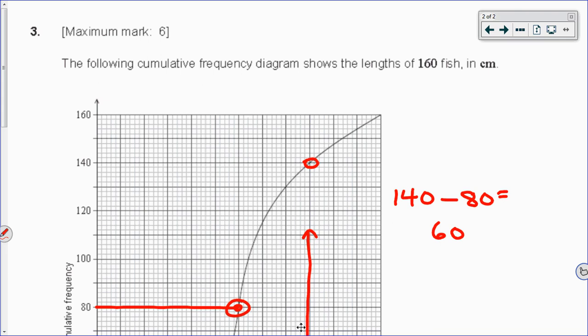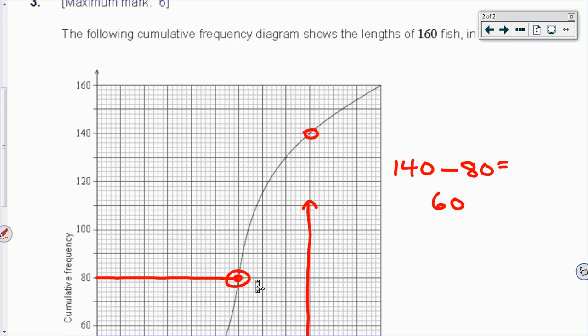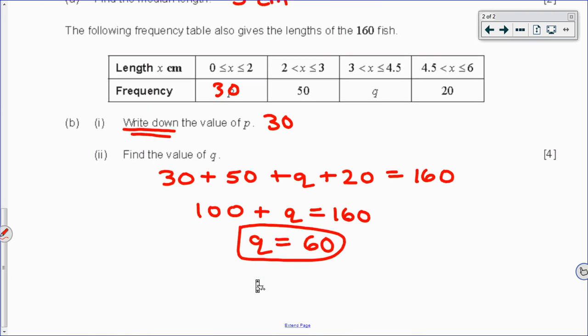So your grader will be looking for either evidence on the graph of finding those two values, or the equation, algebraic equation, that we showed in order to solve for Q down here. Either one of those would be worth the additional three points. And that is all.